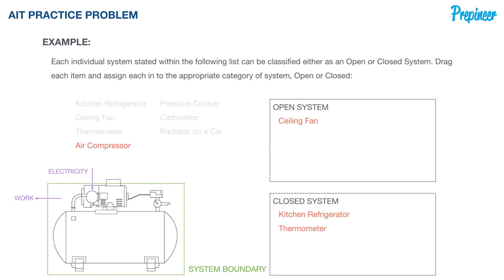Now what about an air compressor? Here are our system boundaries. An air compressor converts electricity supplied to drive the compressor motor, which takes in air at low pressure and exhausts it back into the environment at a higher pressure. With transfer of both matter and energy, a compressor is an open system.